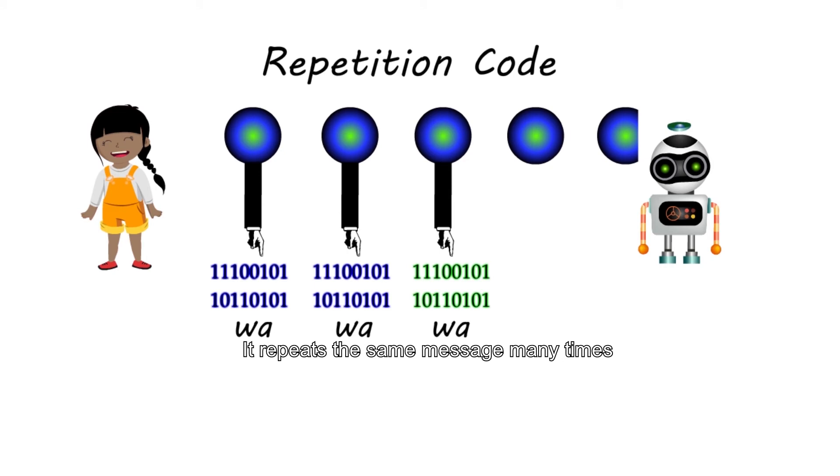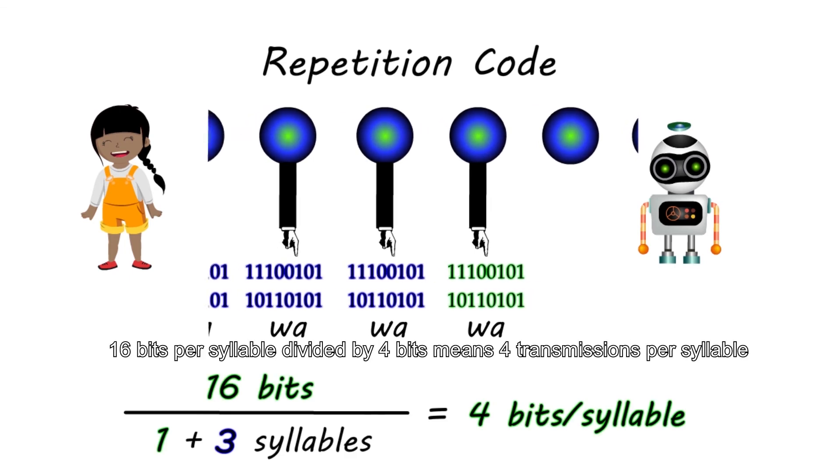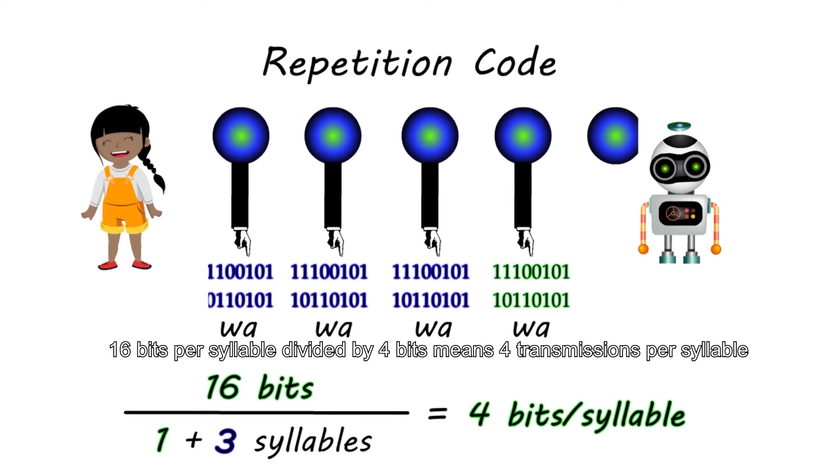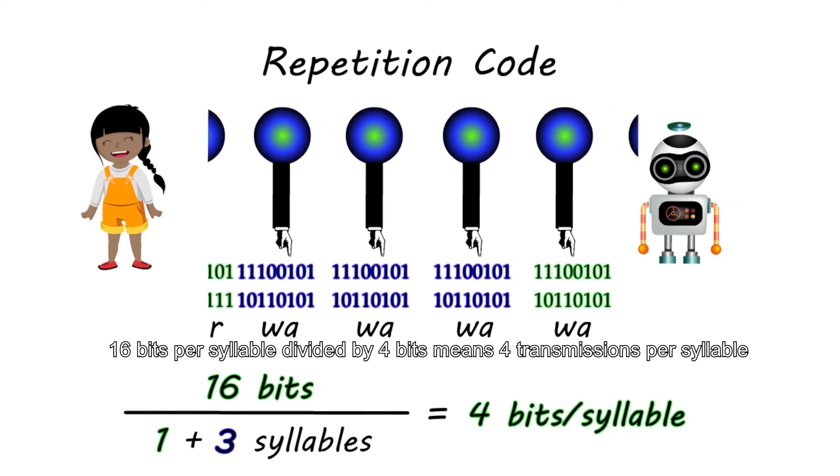It repeats the same message many times and receives the message that has the most frequency. Given the capacity of 4 bits per syllable, 16 bits per syllable divided by 4 bits means 4 transmissions per syllable. Therefore, we will need to repeat each syllable on average 4 times for a successful transmission.